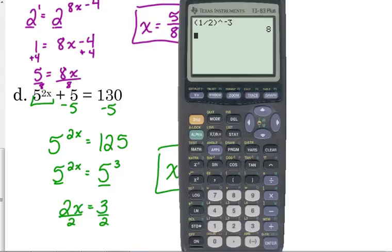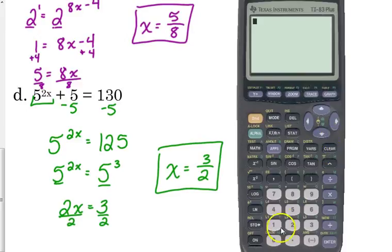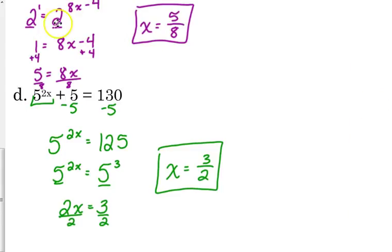We can plug it back in to the original. Be careful with parentheses. 5 to the, put it in parentheses, 2 times 3 over 2. Technically, you don't really need to put the fraction there in parentheses. Close the parentheses. Add 5. It just feeds the one on the backside. Yes!